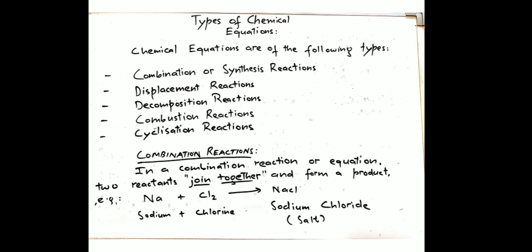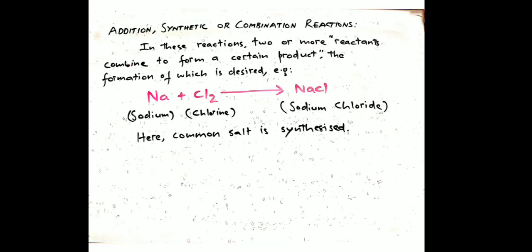These are basic types of reactions. Combination reactions are those in which two or more reactants combine to form one desired product — they are also called synthetic reactions. For example, this is a combination reaction of sodium and chlorine to form sodium chloride, which is common salt.